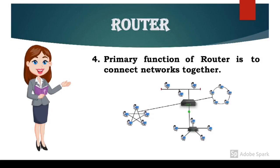The fourth point says: primary function of router is to connect networks together. It means router kai functions perform karta hai lekin uska main function hota hai kai networks ko apas mein connect karna aur ek network se data ko dusre network par move karana.